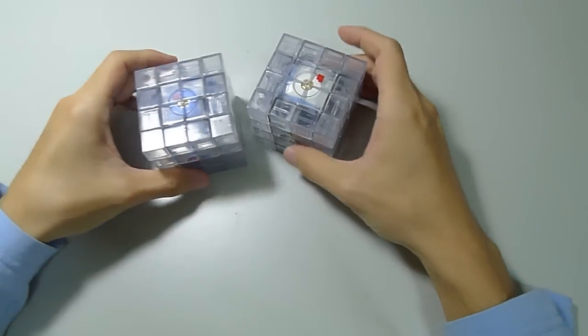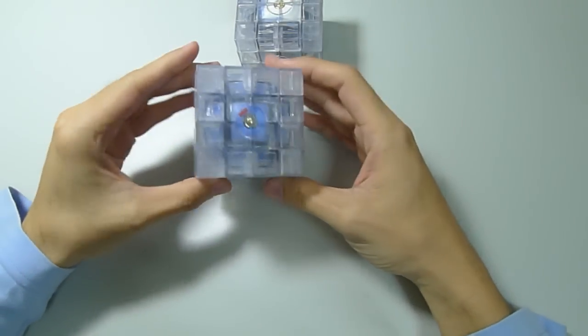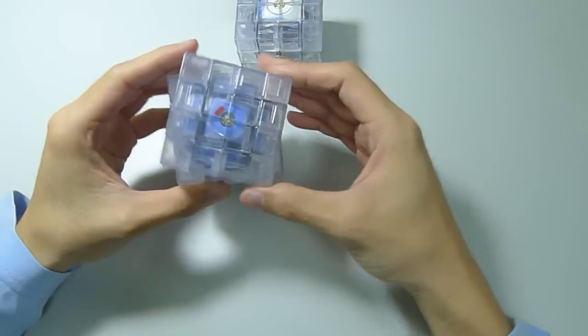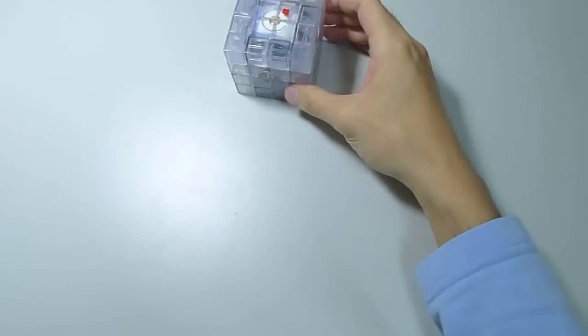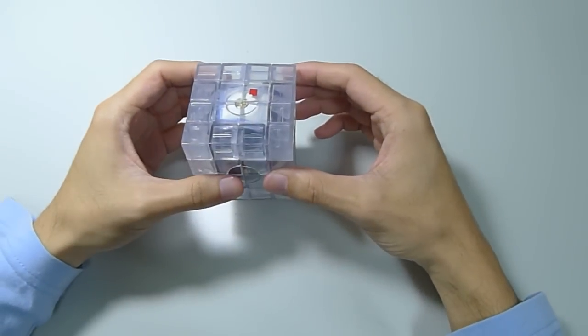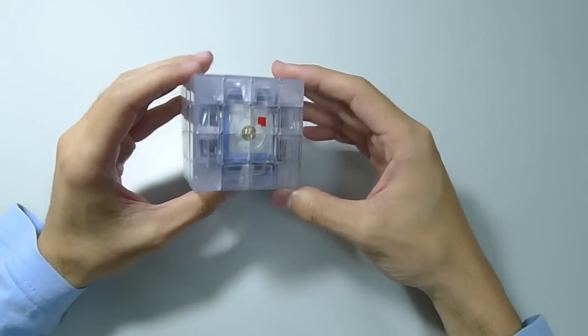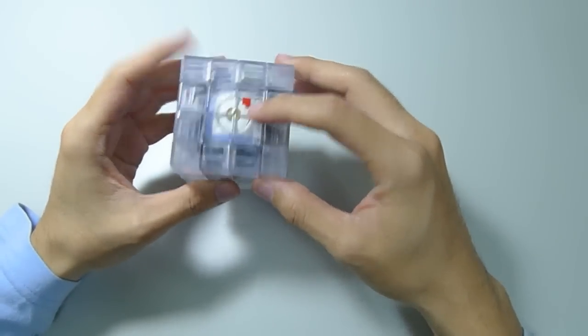I made both clear cubes here. This one is original Xcube with the mechanism marked by red stickers. And this one, I just modded it into the Pi mechanism and I also marked it with red as you can see.